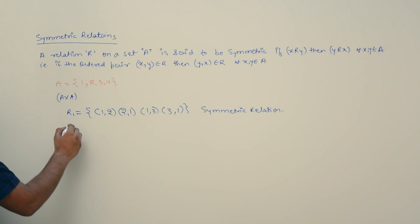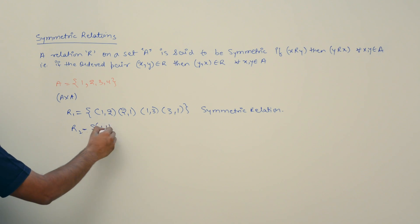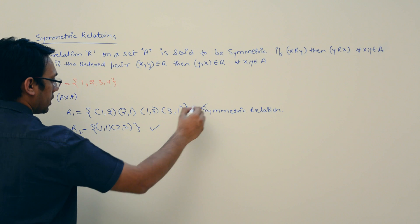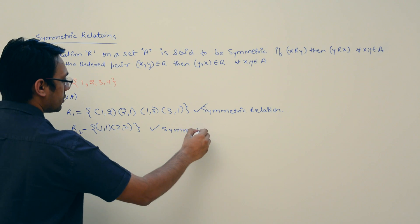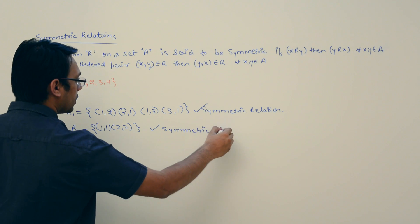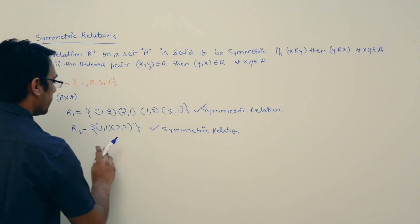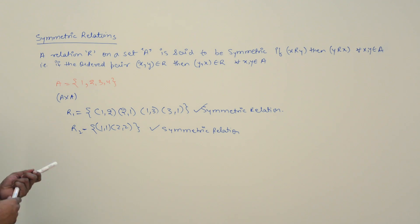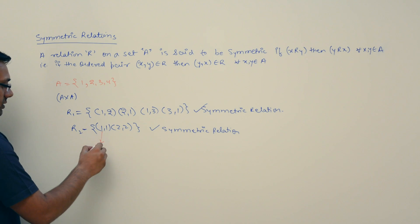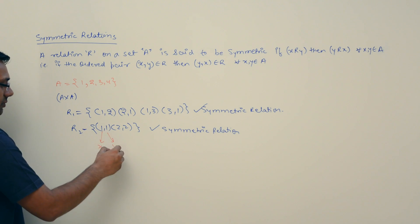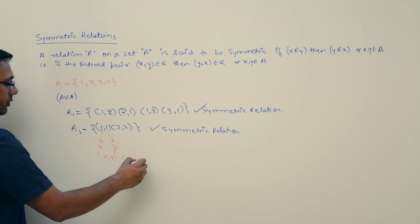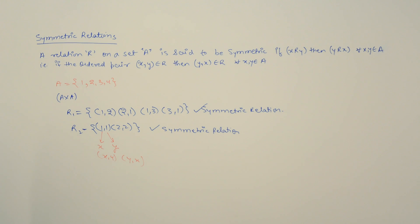Now if we have a relation R2 containing {(1,1), (2,2)}, this relation is also a symmetric relation. Why? Because if we have (1,1), this is represented by (x, y) where x and y are both 1. So if we have (x, y), we also have (y, x), which is also (1,1). So this relation is also symmetric.